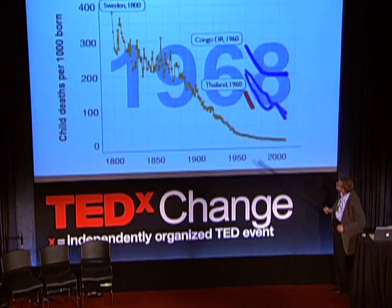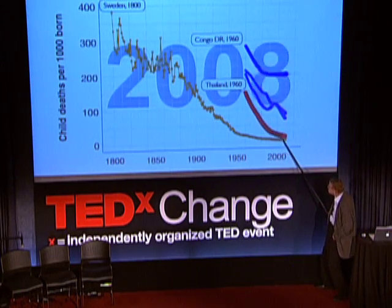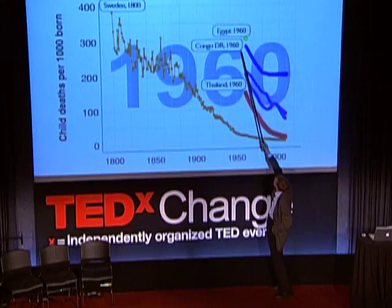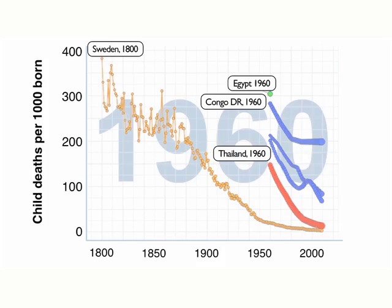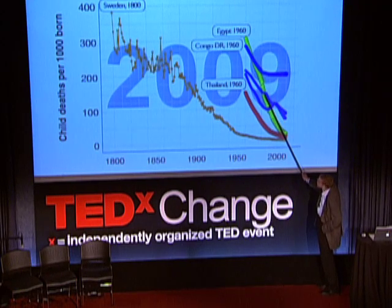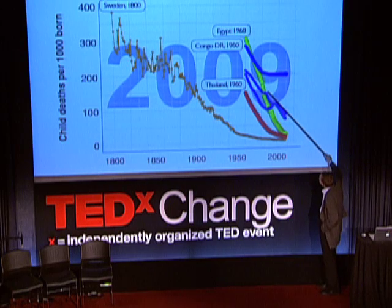Let me show you Thailand — a great success story from the 1960s, going down to almost the same child mortality levels as Sweden. And Egypt: the most hidden glorious success in public health. Egypt was higher than Congo in 1960 — the Nile Delta was a misery for children with diarrheal disease and malaria. Then they got electricity, increased education, primary health care, safer water, and eradicated malaria. And isn't it a success story? Ghana today is going at the same rate as Egypt at its fastest. Kenya is now speeding up. But there is a severe problem in countries which are at a standstill.